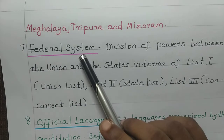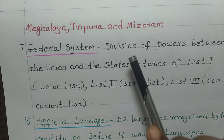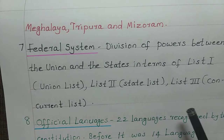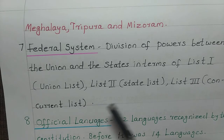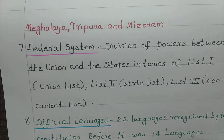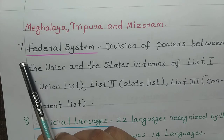Seventh schedule: keyword is federal system. Federal system is nothing but the division of powers between the union and the states in terms of all lists. The lists are: List 1 — Union List, List 2 — State List, and List 3 — Concurrent List. All these lists come under the federal system, that is, under schedule 7.